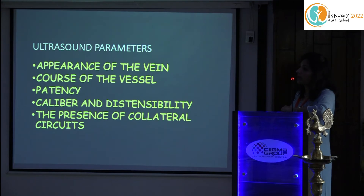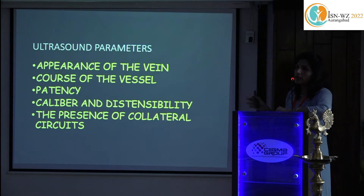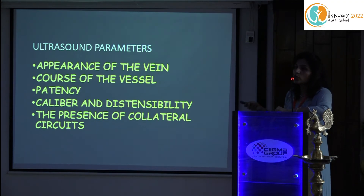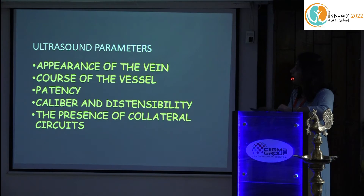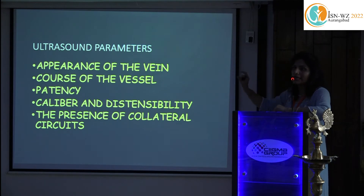When evaluating the veins, the key points to check are: appearance of the vein, course of the vessel, patency, caliber and distensibility, and presence of collateral circuits. Appearance means the vein should look hypoechoic and be compressible, indicating patency with no intraluminal thrombus. The course should provide at least 8–10 cm of a straight, linear, non-tortuous vein without wall thickening.